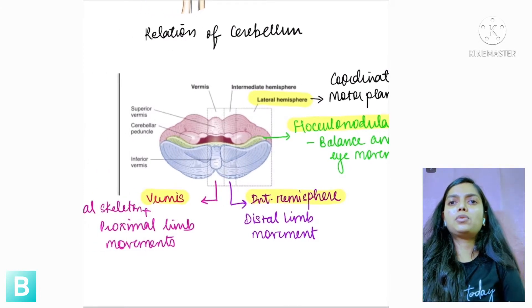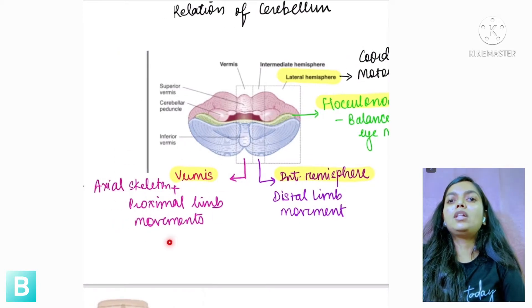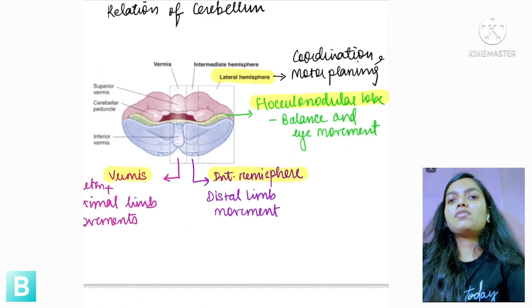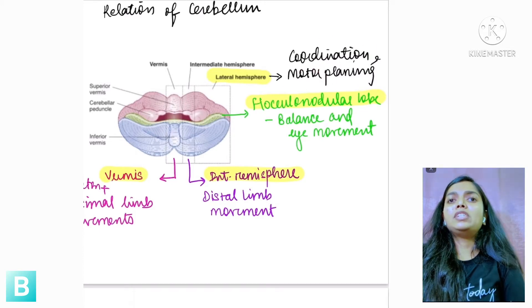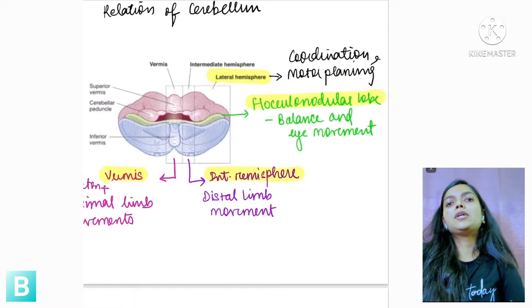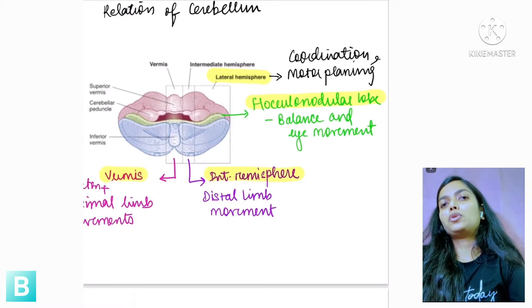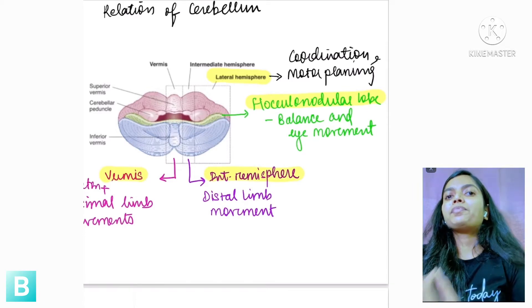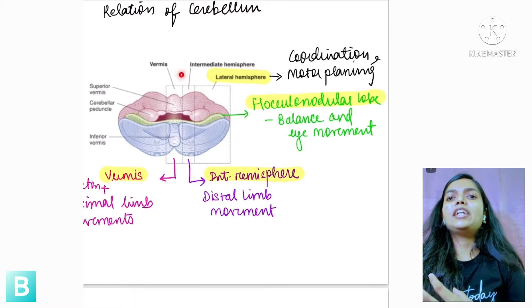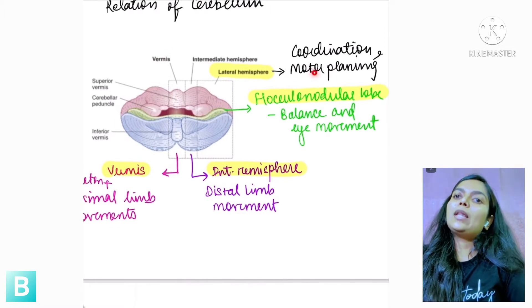Different functions are attributed to different parts of the Cerebellum. The vermis controls axial skeleton and proximal limb movements. The intermediate hemisphere controls distal limb movements. The lateral hemisphere controls coordination and motor planning. Whenever we ask our brain to perform any voluntary movement, the brain sends the impulse via the spinal cord to distinct muscles, but fine tuning of those movements is provided by the Cerebellum.